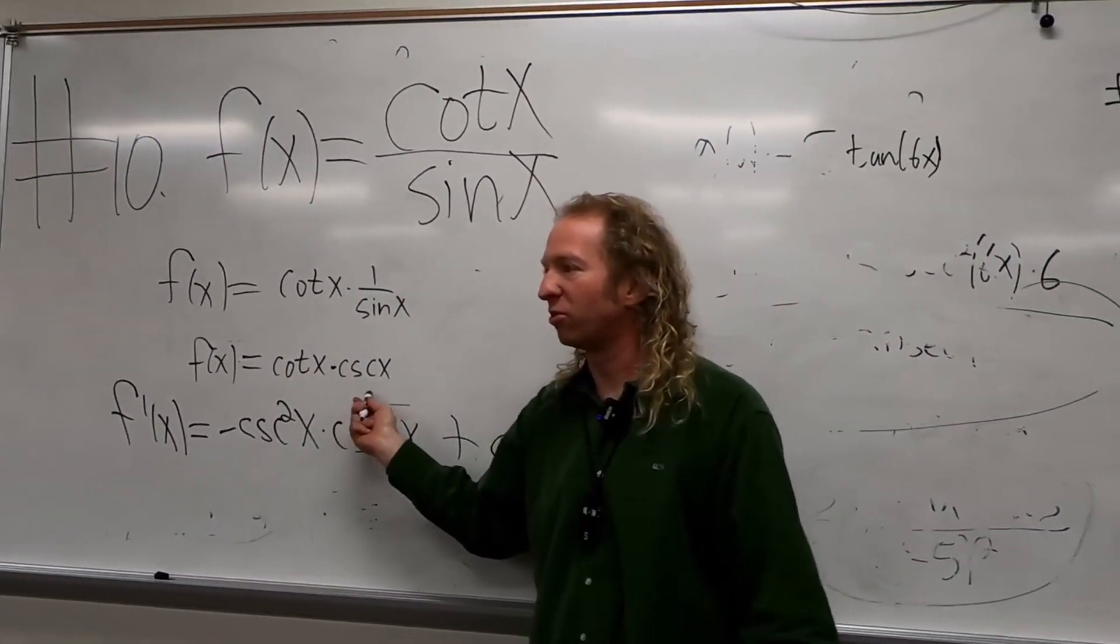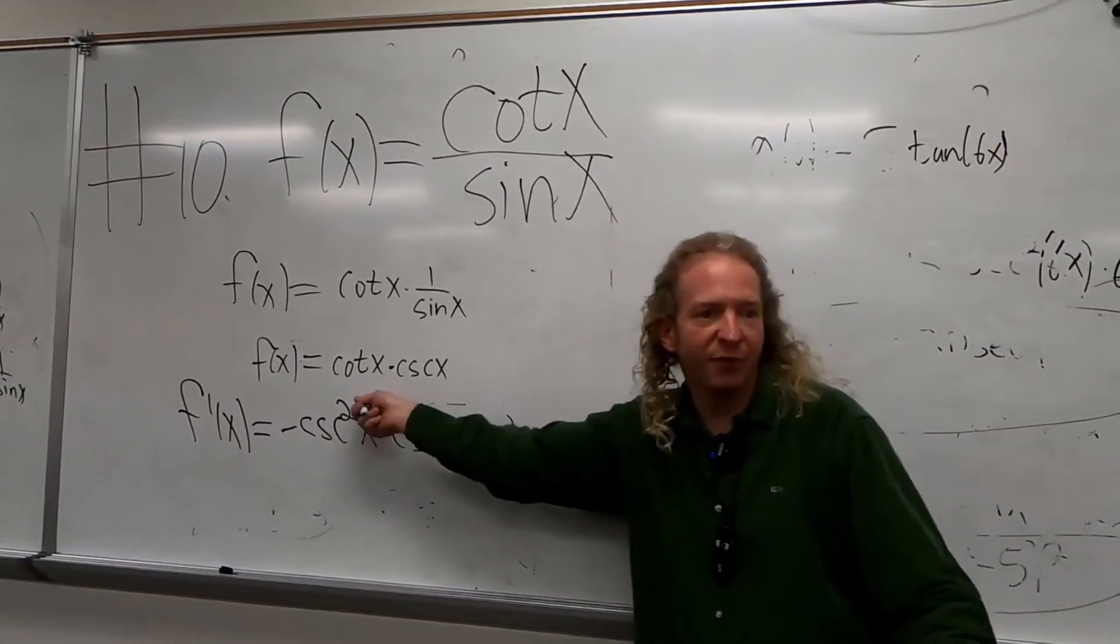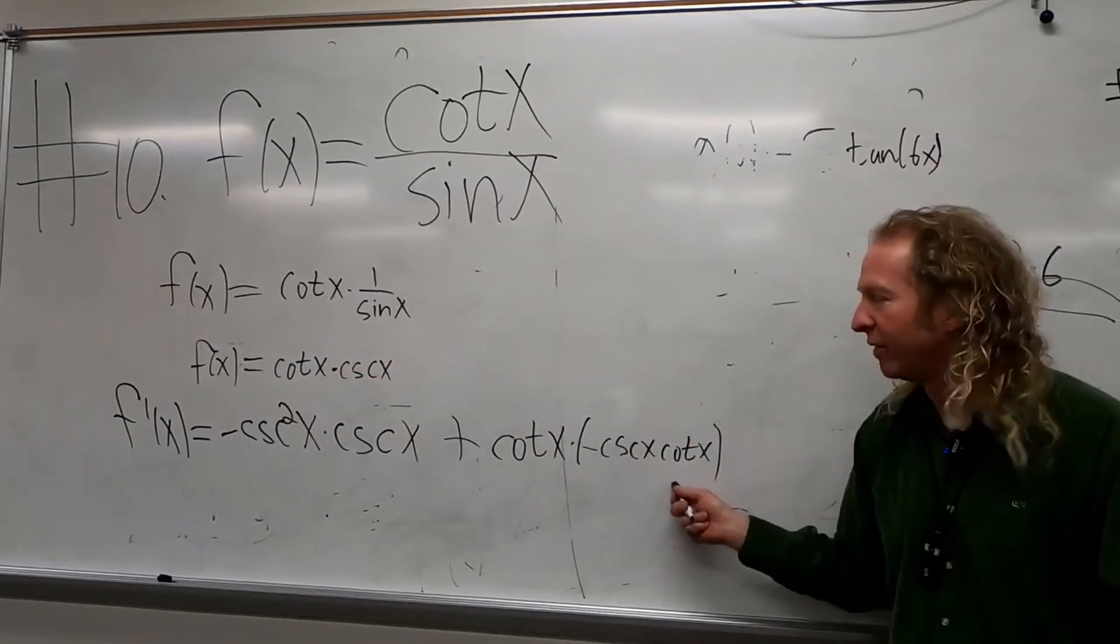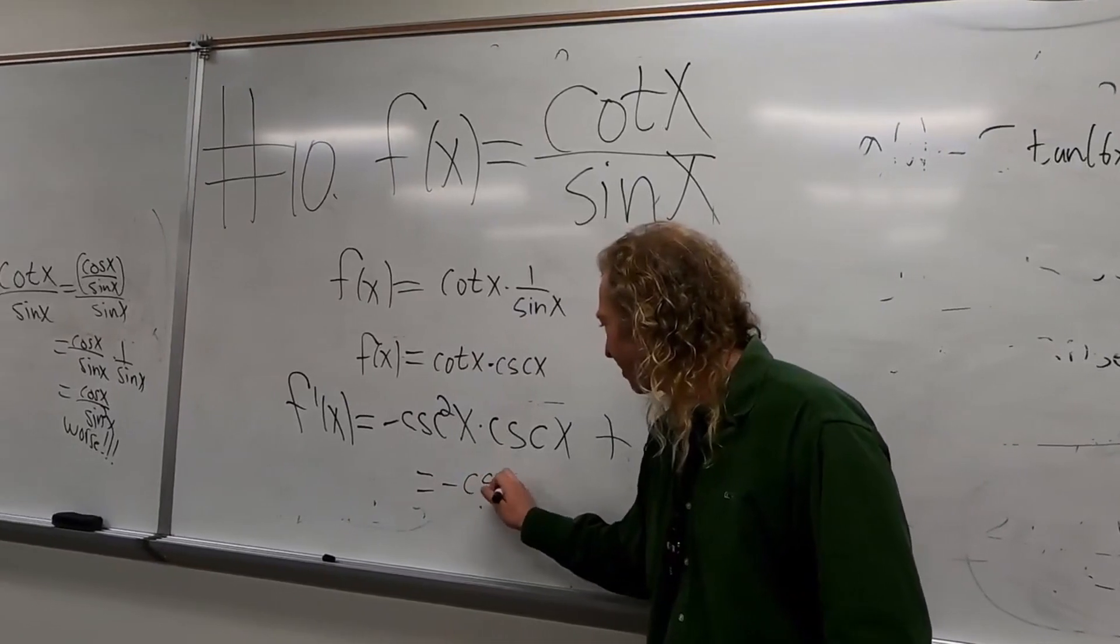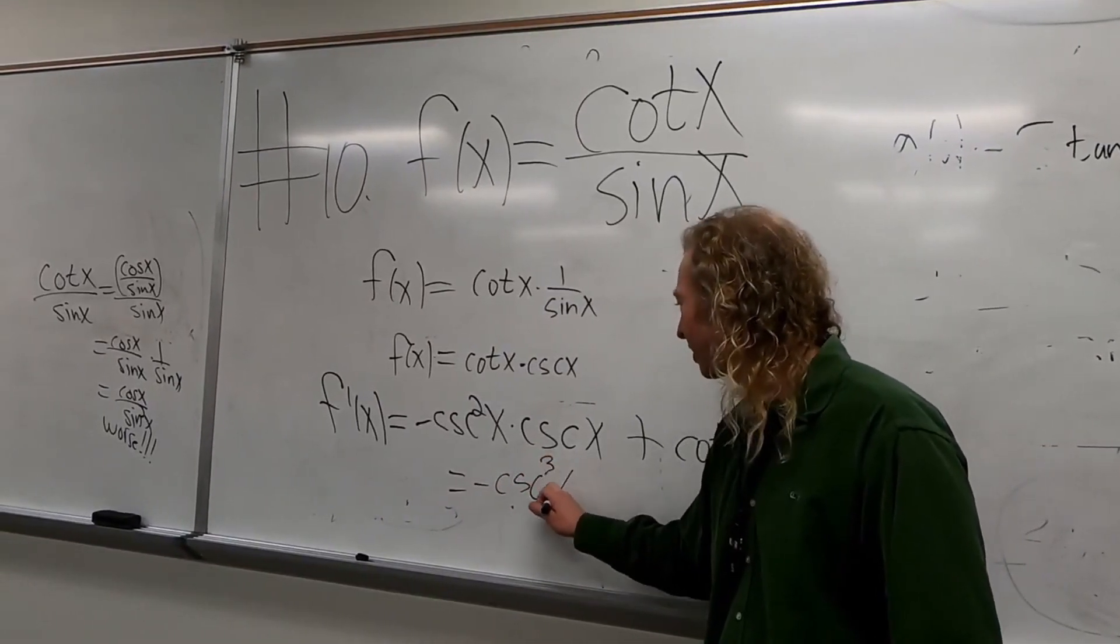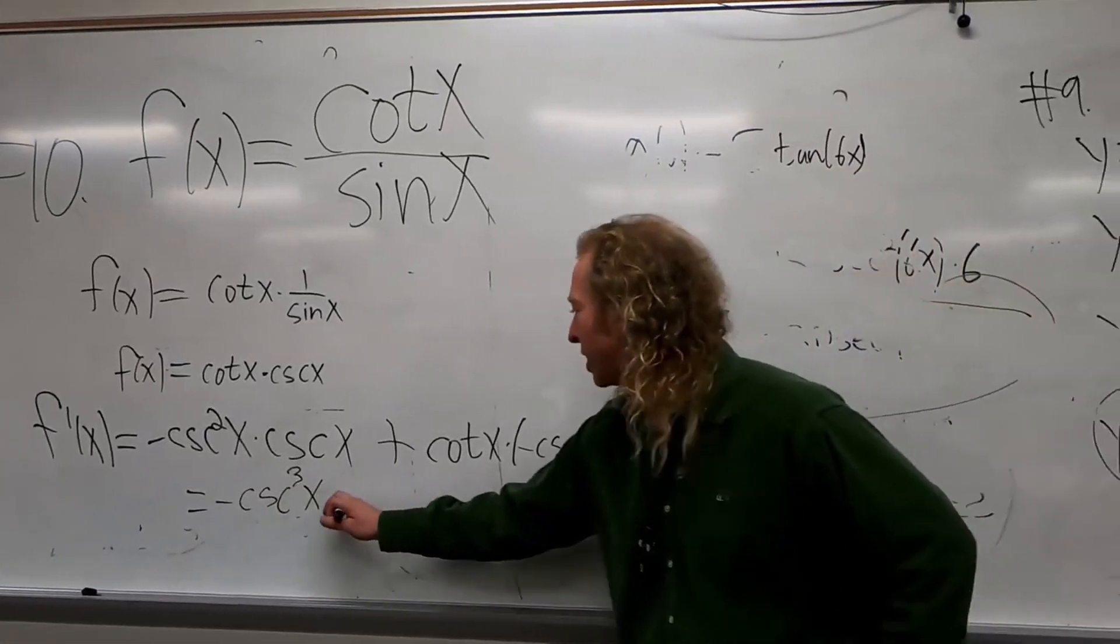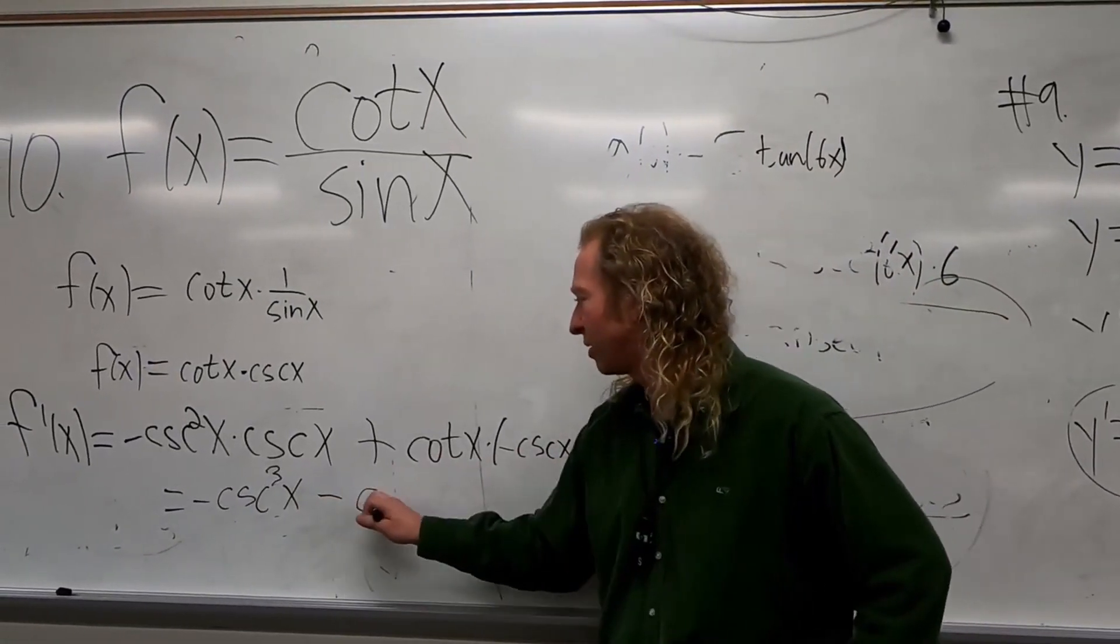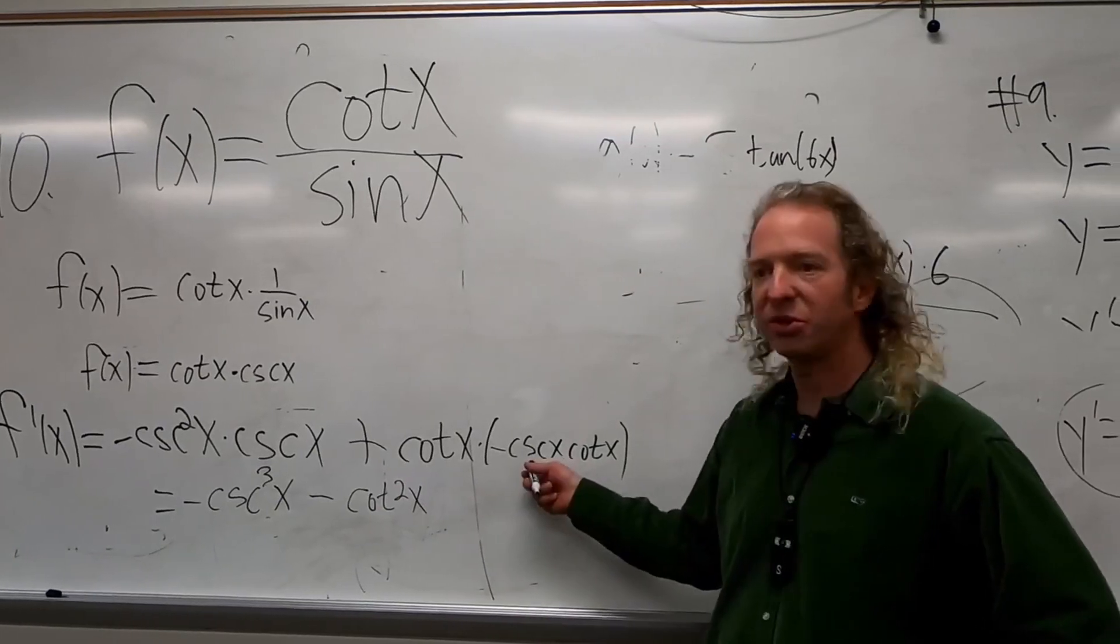This is a little bit easier. It's a product rule, right? So the derivative of the first times the second plus the first times the derivative of the second. I guess now we can just combine these cosecants, right? So this will be negative cosecant cubed X, and this one is going to be minus cotangent squared and then cosecant.